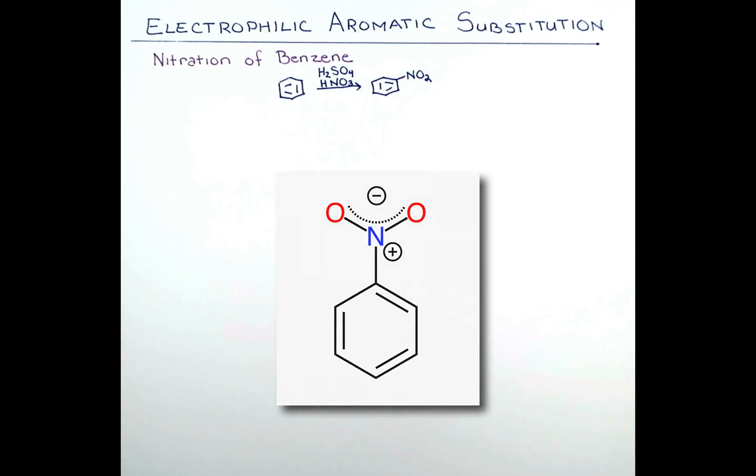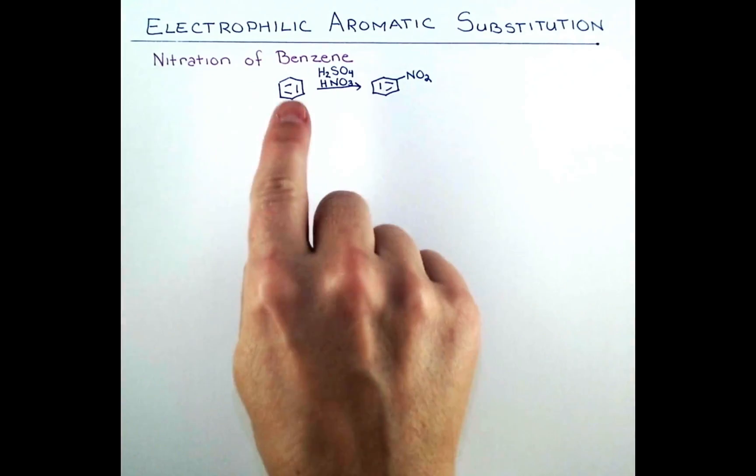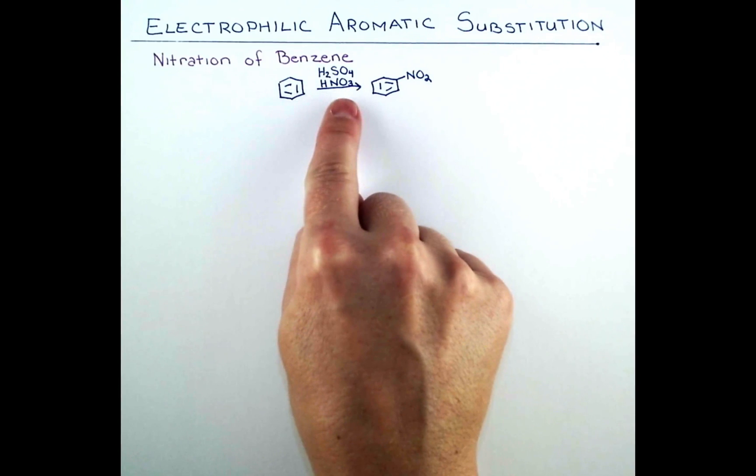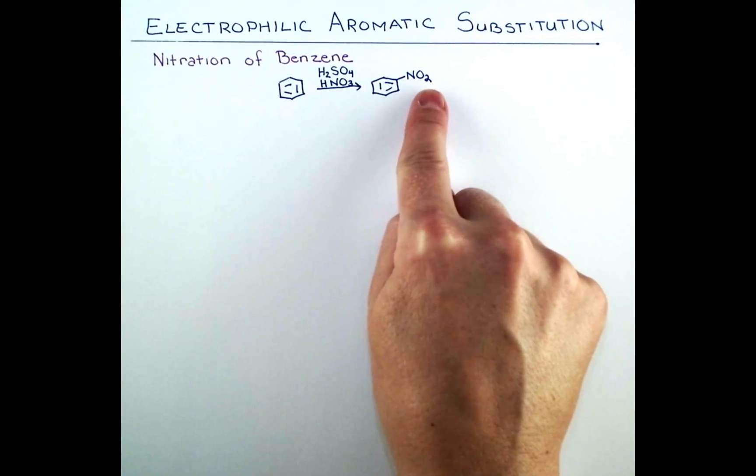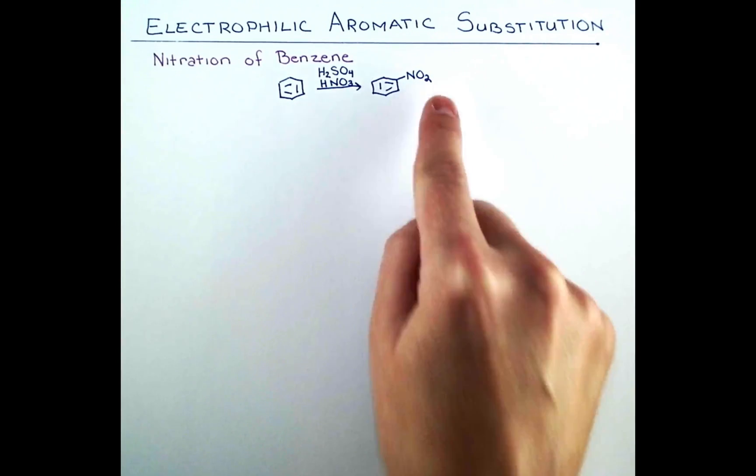In the nitration reaction, benzene can be reacted with a mixture of sulfuric and nitric acid to form nitrobenzene.